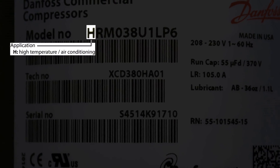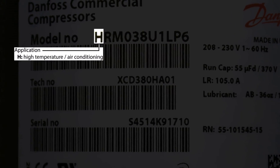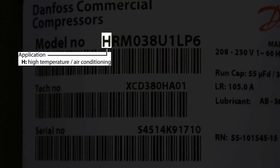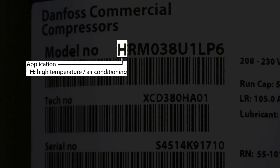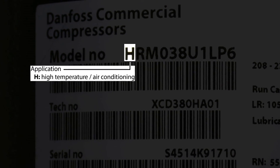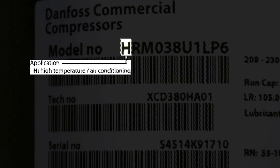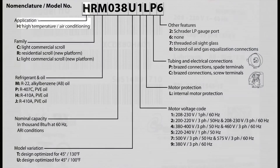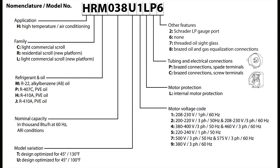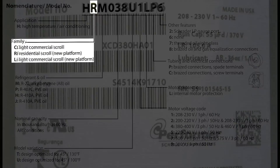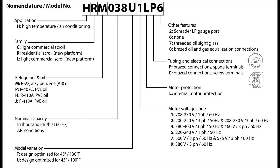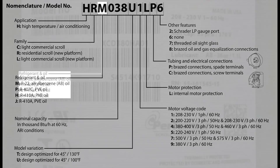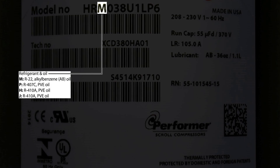The first digit, in this case H, signifies the compressor is for high temperature refrigeration or air conditioning applications. The second digit signifies what type of compressor. The third digit signifies the oil and refrigerant.